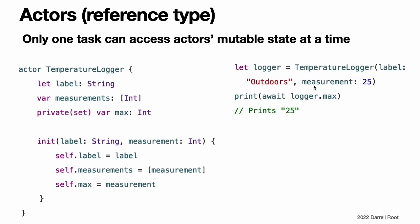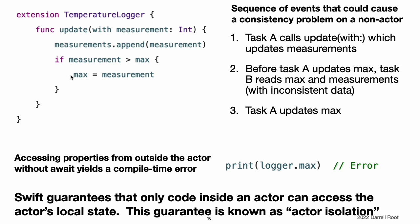You create an instance of an actor using the same initializer syntax as structures and classes. When you access a property or method of an actor, you use await to mark the potential suspension point. In this example, accessing logger.max is a possible suspension point. Because the actor allows only one task at a time to access its mutable state, if code from another task is already interacting with the logger, this code suspends while it waits to access the property. In contrast, code that is part of the actor does not write await when accessing the actor's properties.